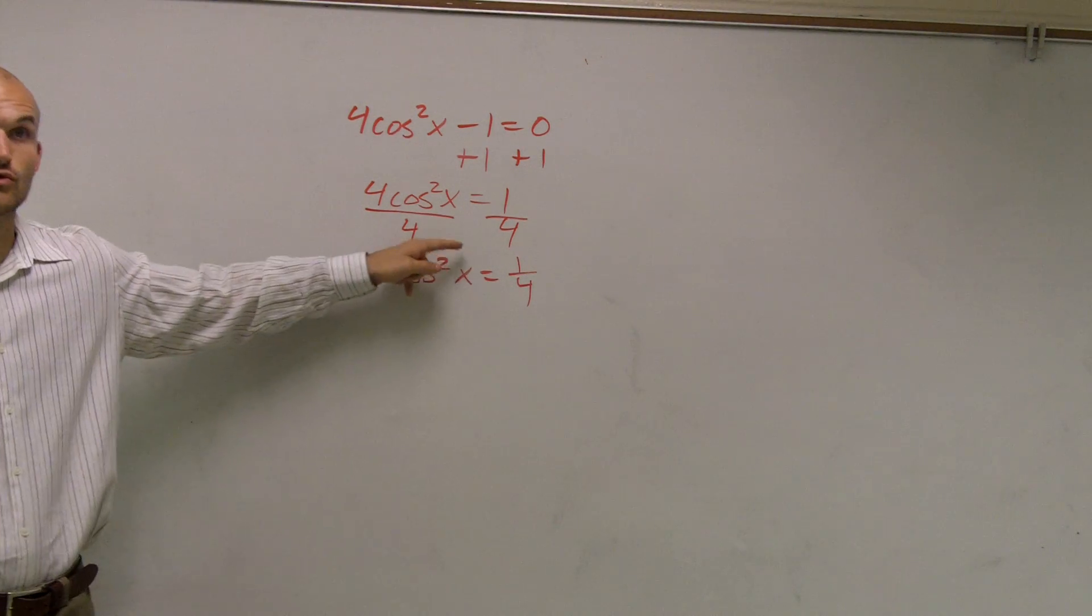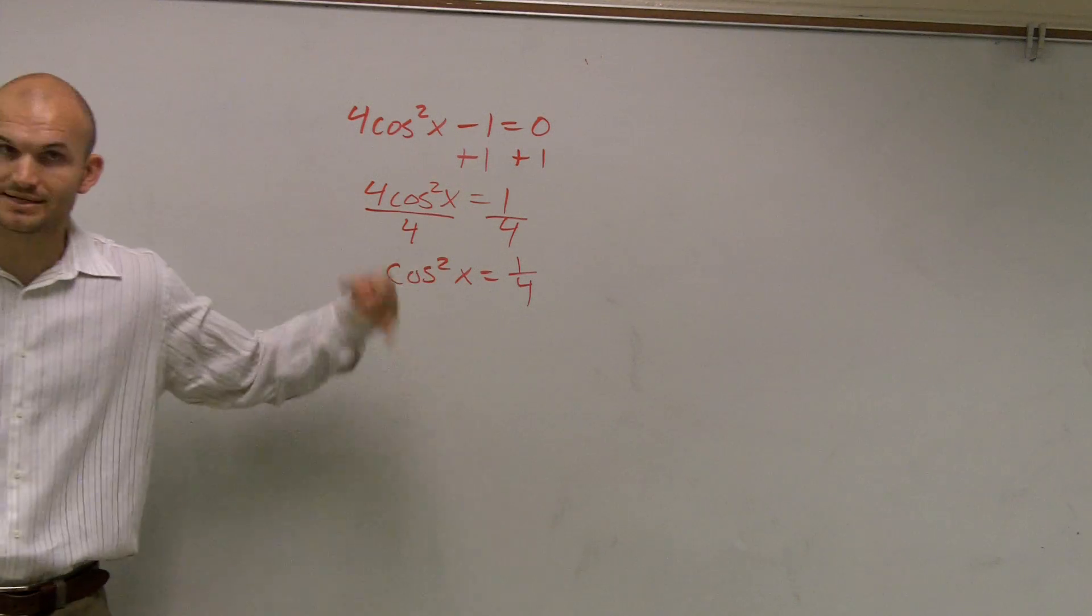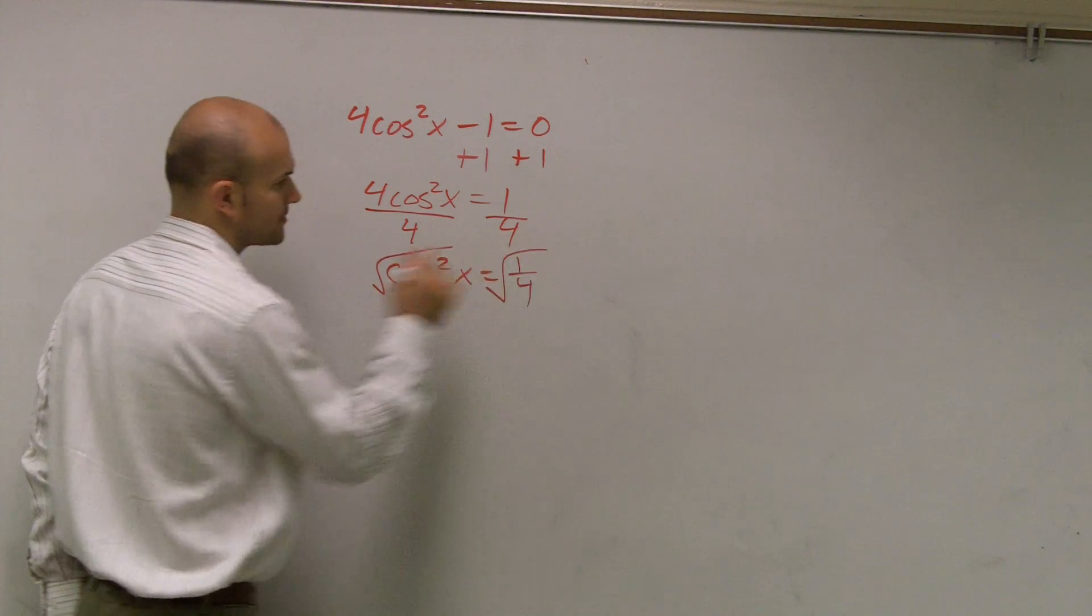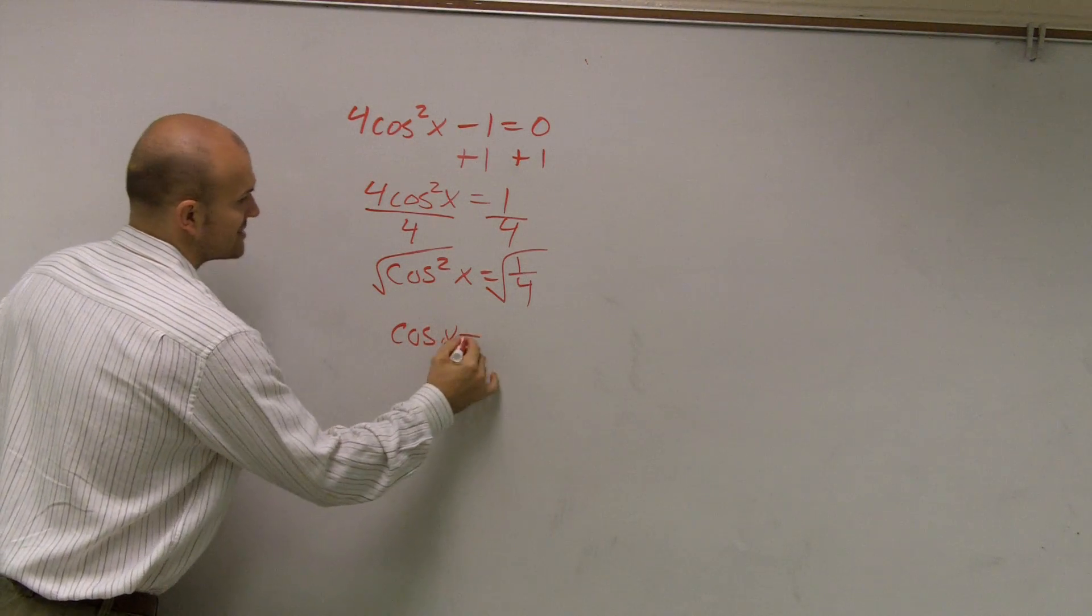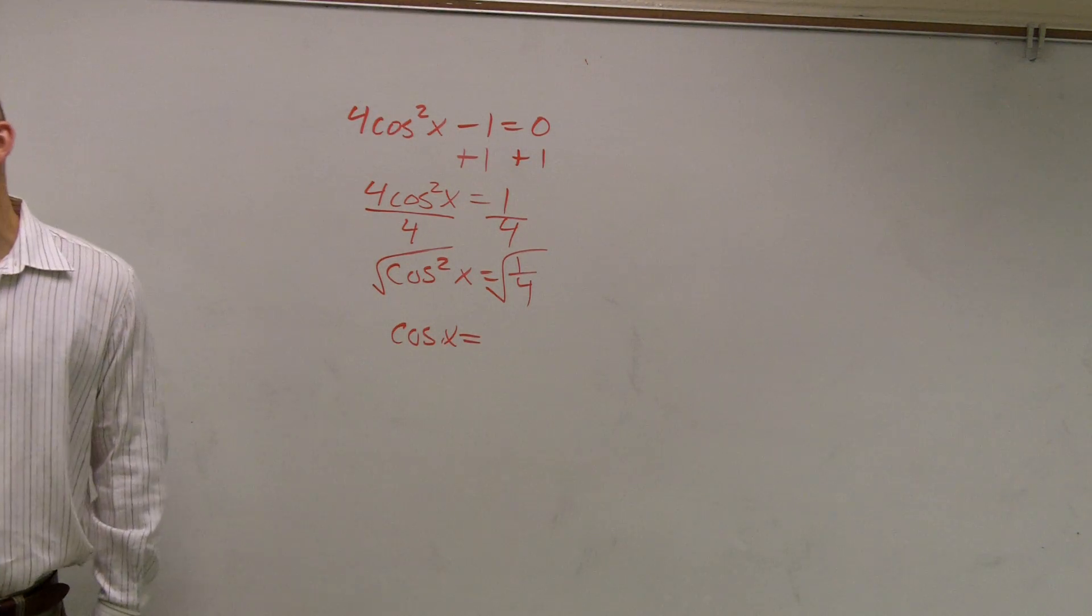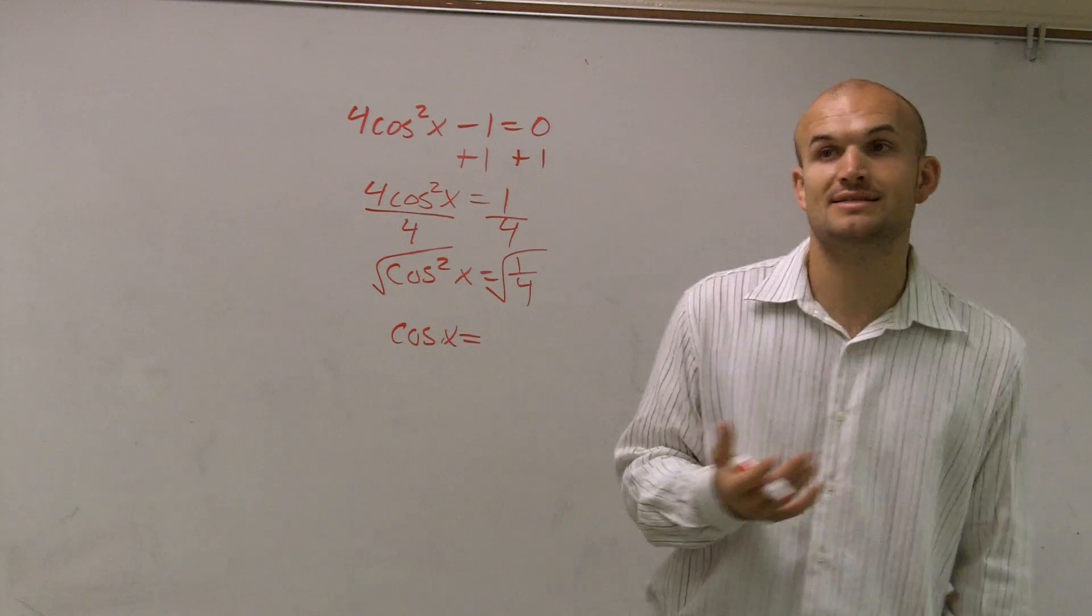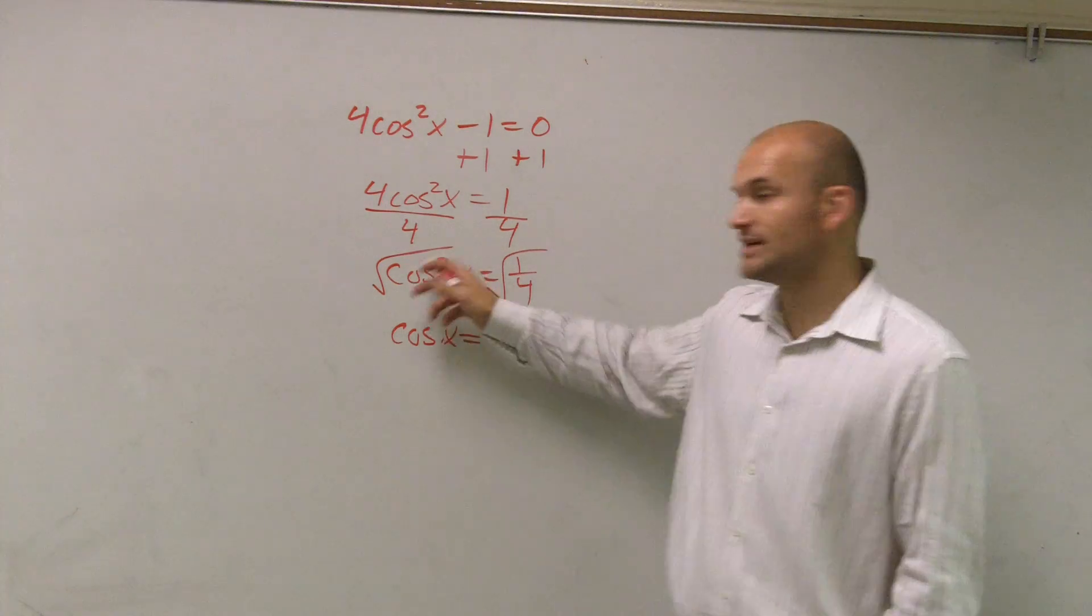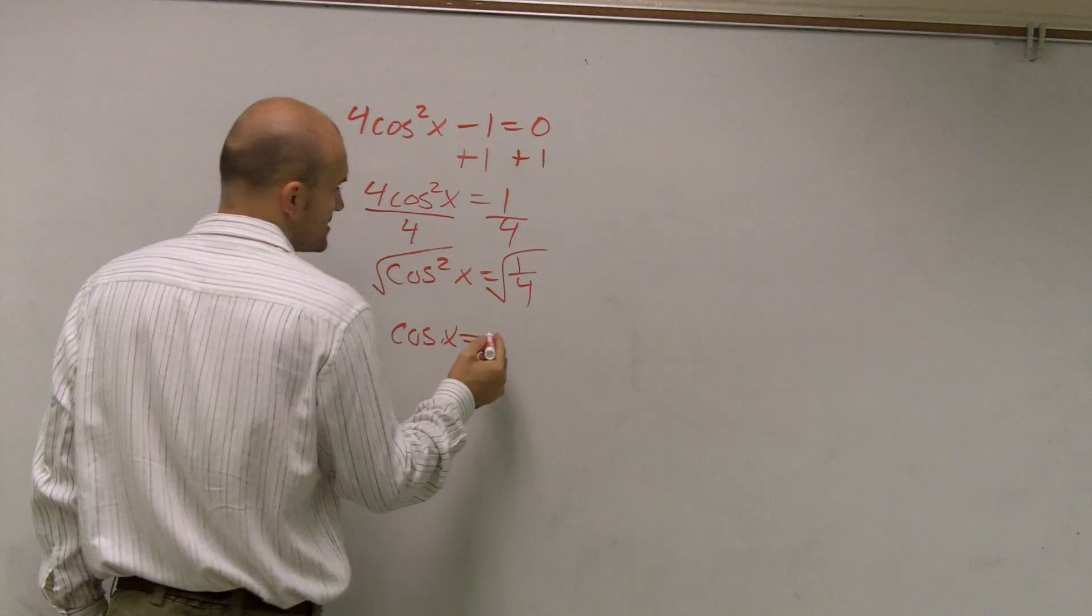Now I need to get rid of this square. Cosine squared x means cosine times cosine. So to undo the squaring, we take the square root. Now I have cosine x equals... Please remember this. When we were looking at your tests earlier, I'd mark you down for missing that plus or minus. We have to make sure we include the plus and minus when solving.